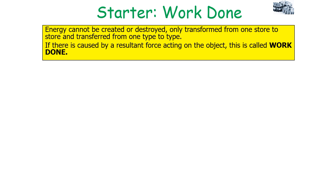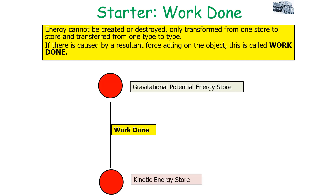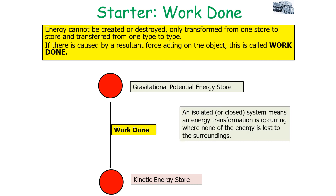This is caused by a resultant force acting on the object — we call this work done. So if a force causes a gravitational potential energy store to turn into a kinetic energy store, we say that work has been done. In an isolated or closed system, this means an energy transformation has occurred when none of this energy is lost to the surroundings.